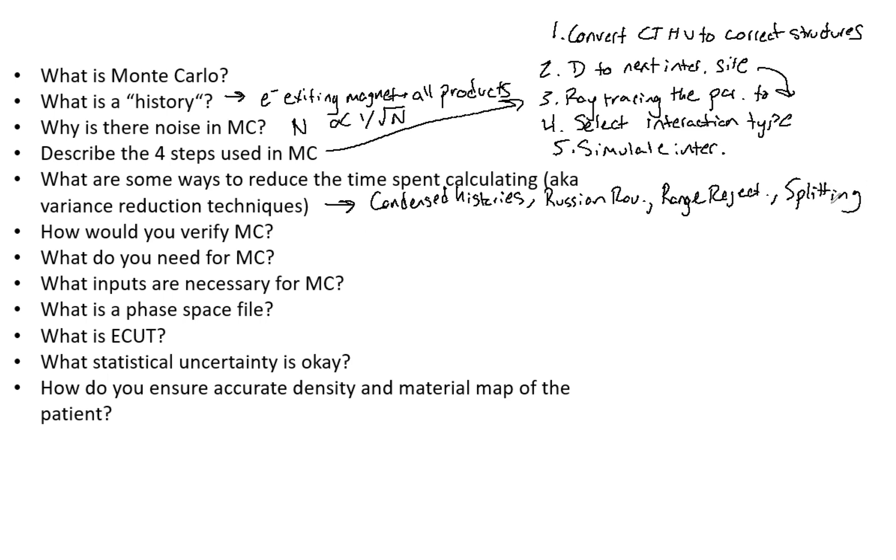Finally there's something called splitting, and that's where you increase the number of particles in the areas with low fluence, and it also reduces final error if you do that. So you want to increase the number of particles in the areas with lower fluence.